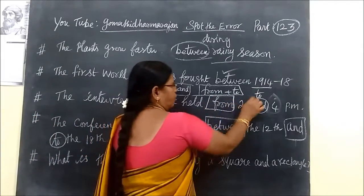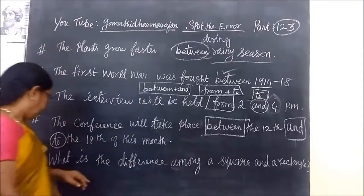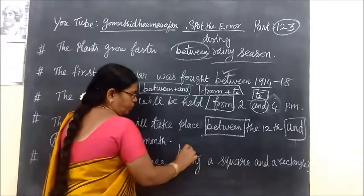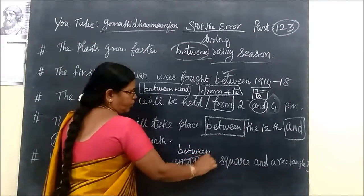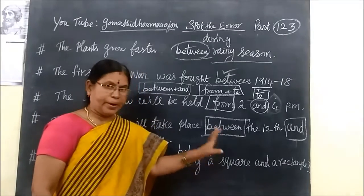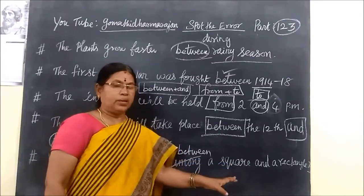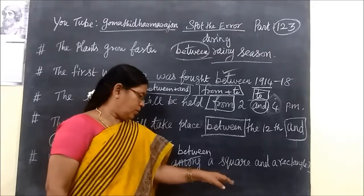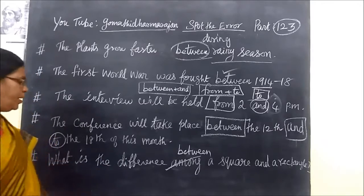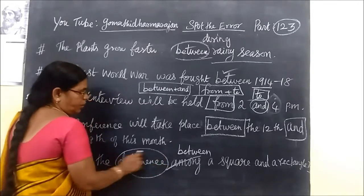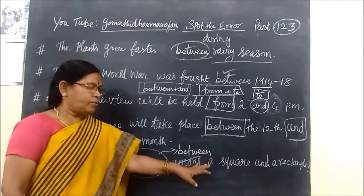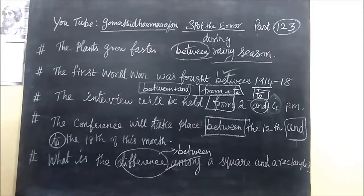The difference is: when there are two separate objects or two separate things, you use 'between.' And the main difference is that 'between' is followed by two distinct items. What is the difference between a square and a rectangle? We will see some more examples.